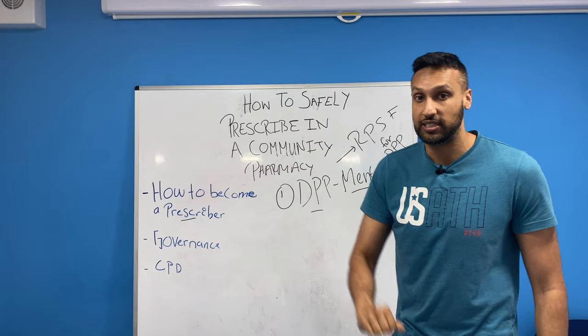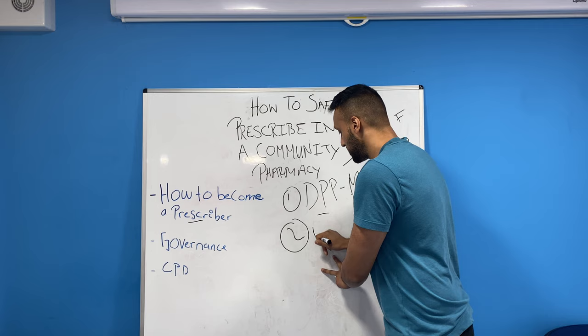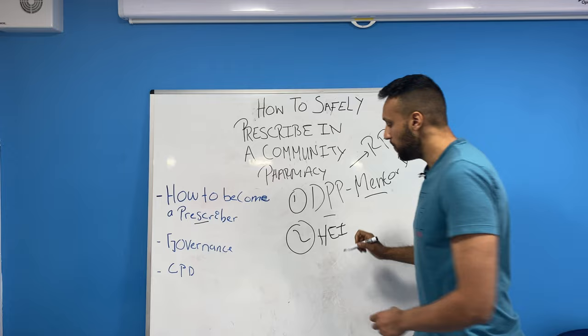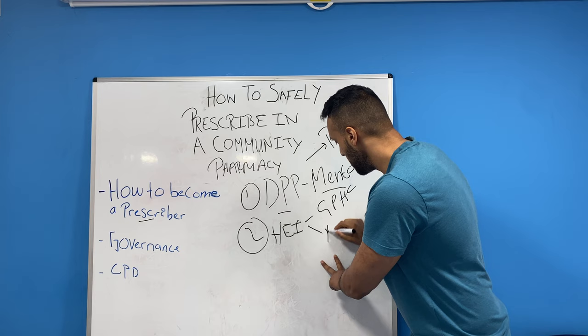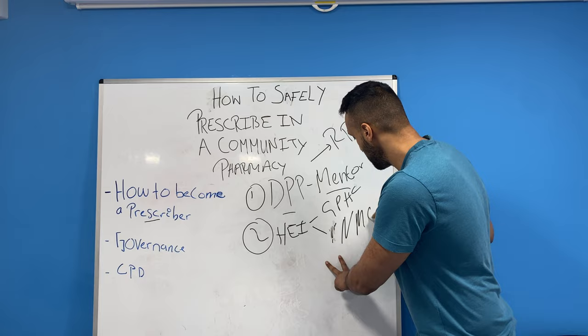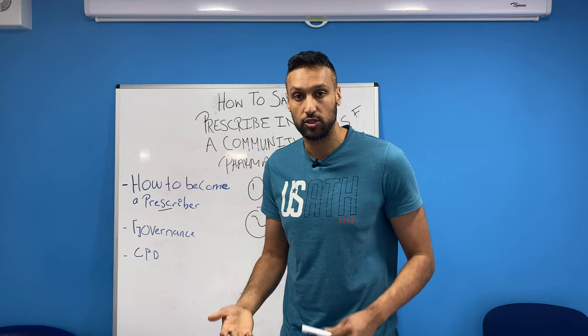Point two: you need to select a university — a higher education institution. If you're a pharmacist, visit the GPhC website and look at accredited courses. If you're a nurse, visit the Nursing and Midwifery Council. And for allied healthcare professionals such as podiatrists, paramedics, and others, visit your relevant website and look at approved institutions.